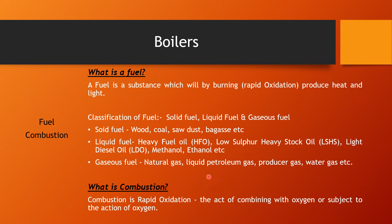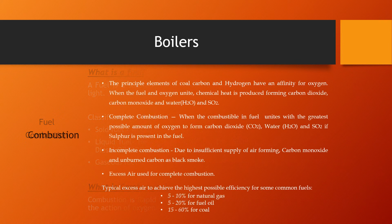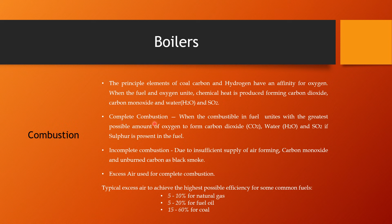When fuel is used in a furnace or boiler, it is called combustion. Combustion is rapid oxidation — the act of combining with oxygen. For combustion, the principal elements of coal — hydrogen and carbon — have an affinity for oxygen. When carbon and hydrogen in any fuel combine with oxygen, chemical heat is produced, forming carbon dioxide, carbon monoxide, water, and sulfur dioxide if sulfur is present in the fuel. Complete combustion occurs when the combustibles in the fuel unite with the greatest possible amount of oxygen to form carbon dioxide, water, and sulfur dioxide if sulfur is present.